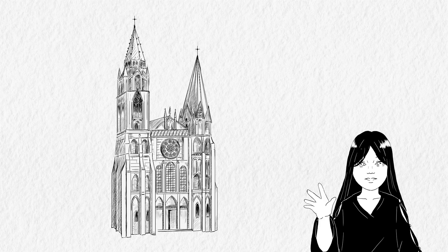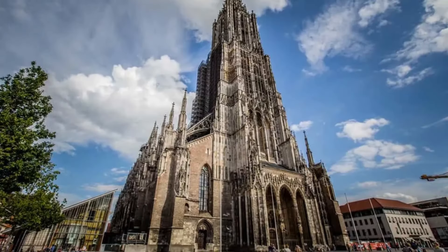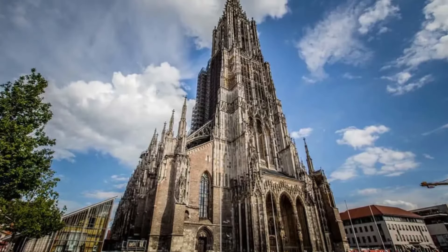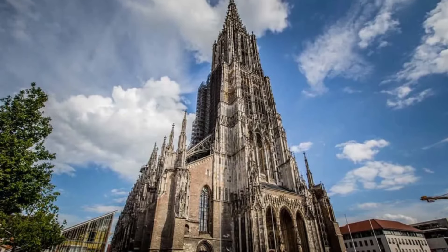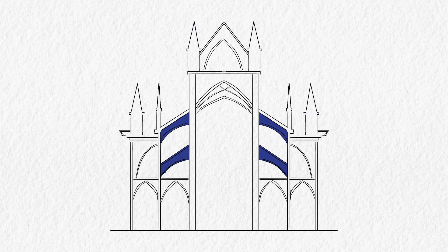Here is a list of key elements that make Gothic architecture Gothic. Number 1: Vertical emphasis. Gothic architecture emphasizes height to soar closer to heaven. Apart from tall and thin walls, they also use spires and pinnacles to increase height. Other architectural advancements like flying buttresses, pointed arches, and rib vaults were implemented to support the higher structure.